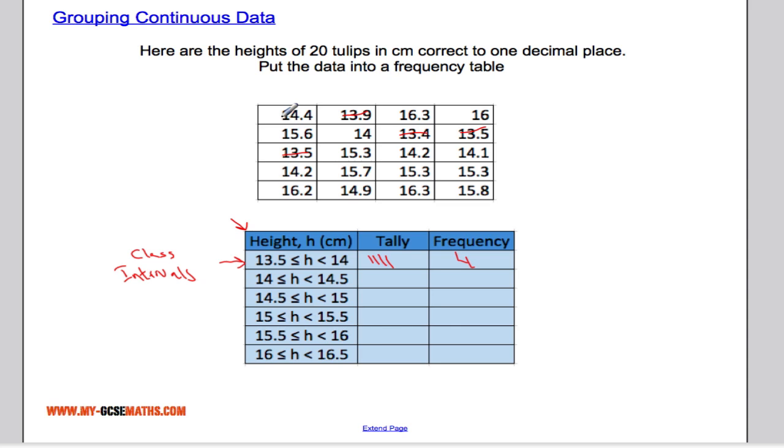So between 14 and 14.5, 1, 2, 3, 4, 5, counting 5 for that one. And again, working your way through all of the data, putting it into our grouped frequency table. So when you've done that, you should end up with something like this.